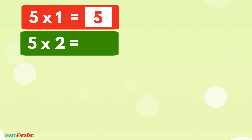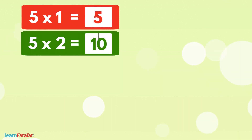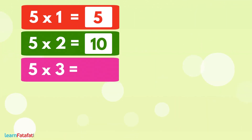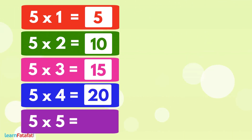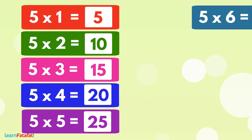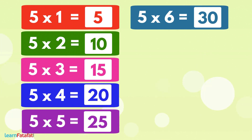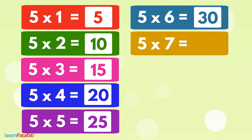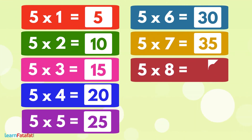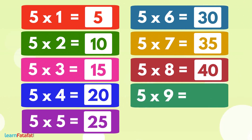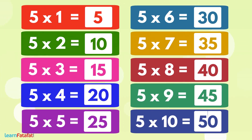5 1s are 5. 5 2s are 10. 5 3s are 15. 5 4s are 20. 5 5s are 25. 5 6s are 30. 5 7s are 35. 5 8s are 40. 5 9s are 45. 5 10s are 50.